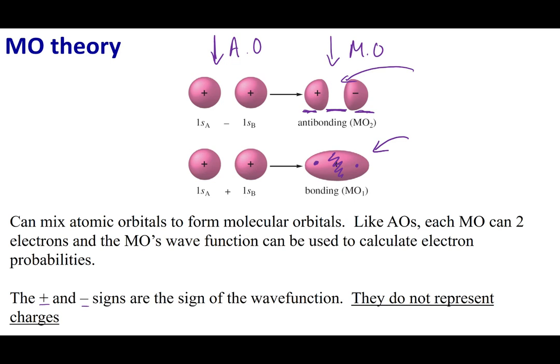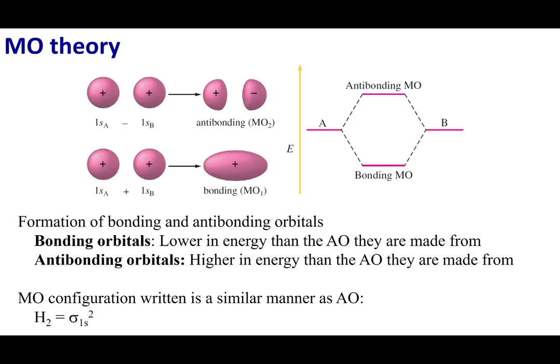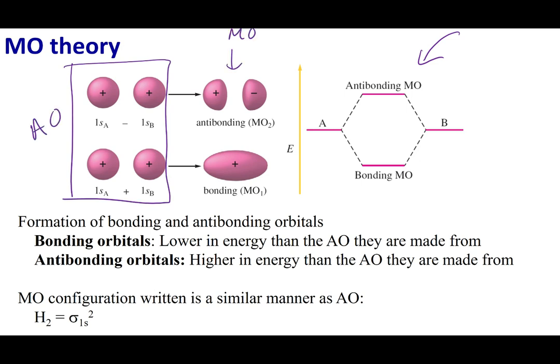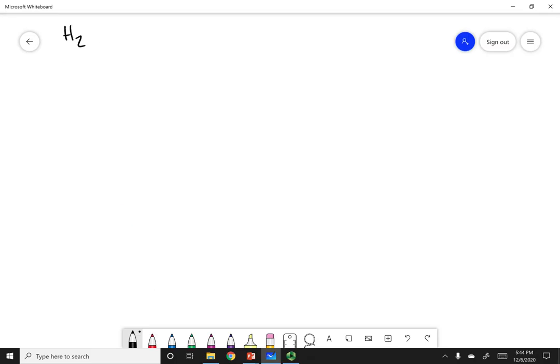Now that I've got my bonding and antibonding orbital, we can start laying down the energies of these orbitals. I want to show you how to generate this energy diagram. We're going to make the H2 molecule. I'm going to draw a three-panel picture: the atoms are going to be on the outside and the molecule is going to be on the inside.